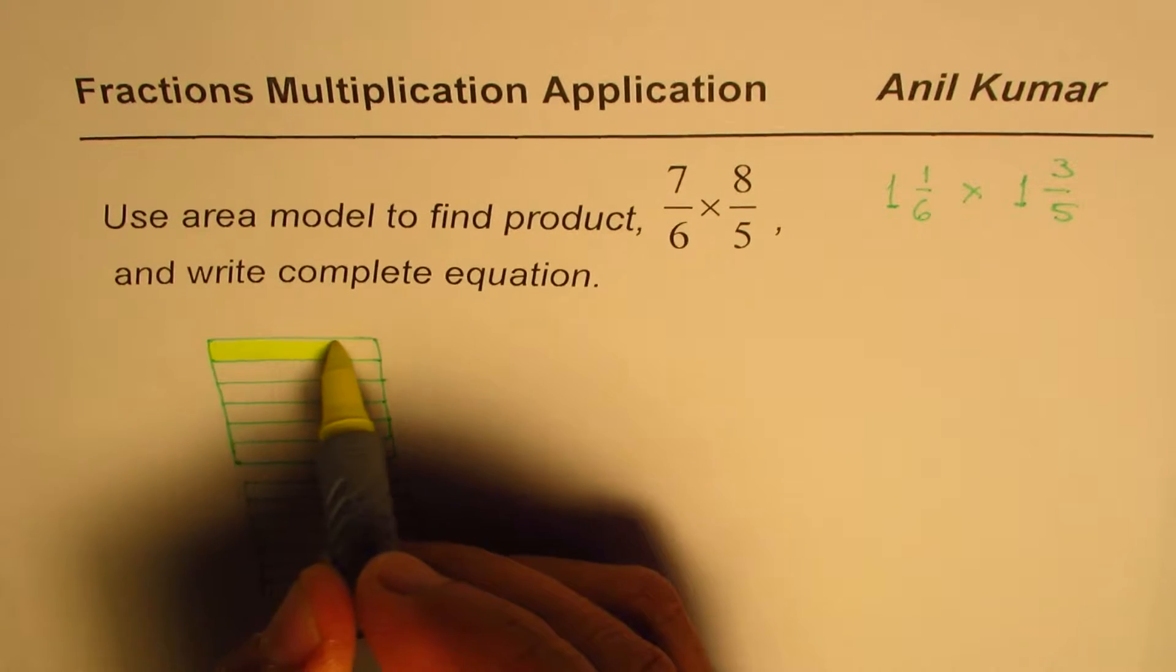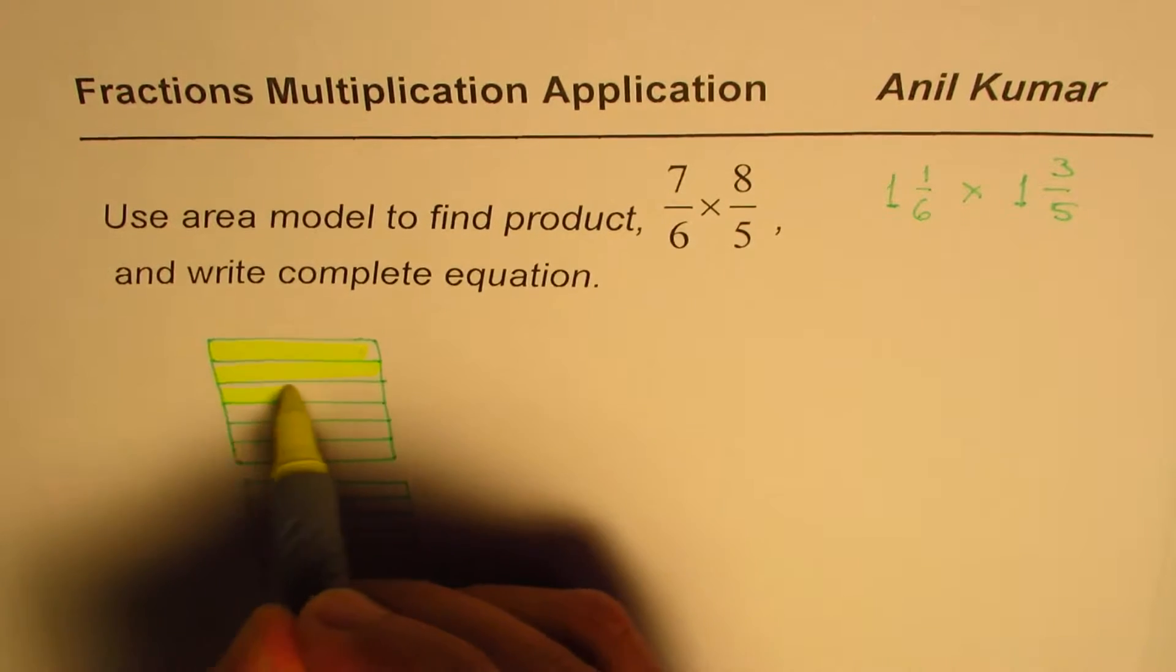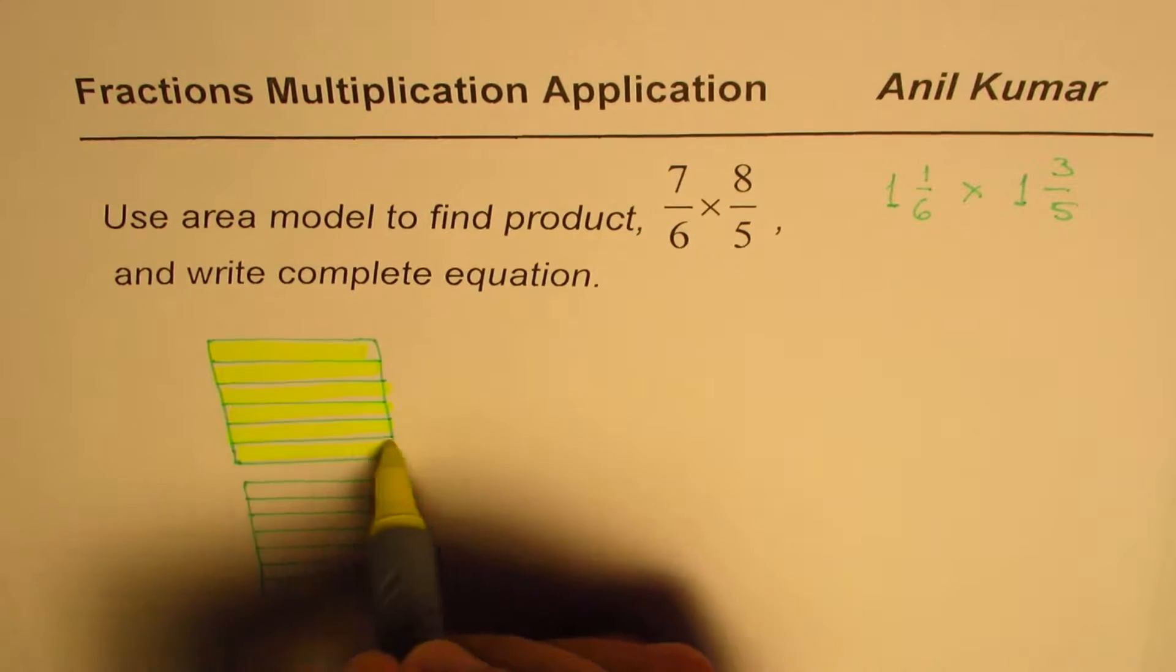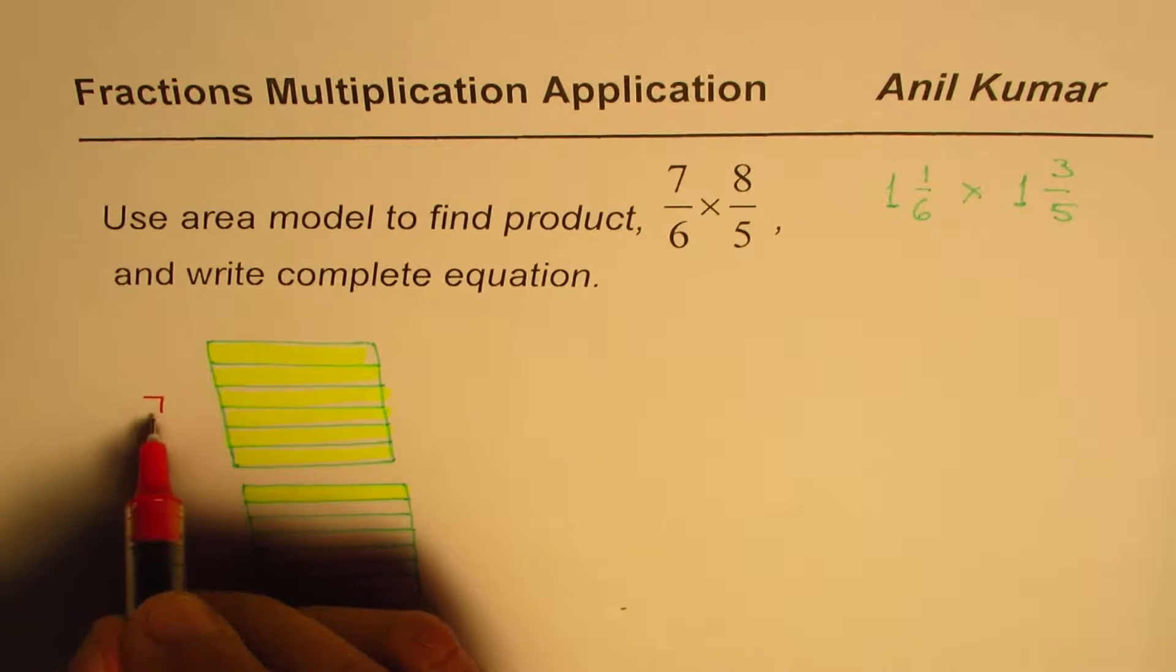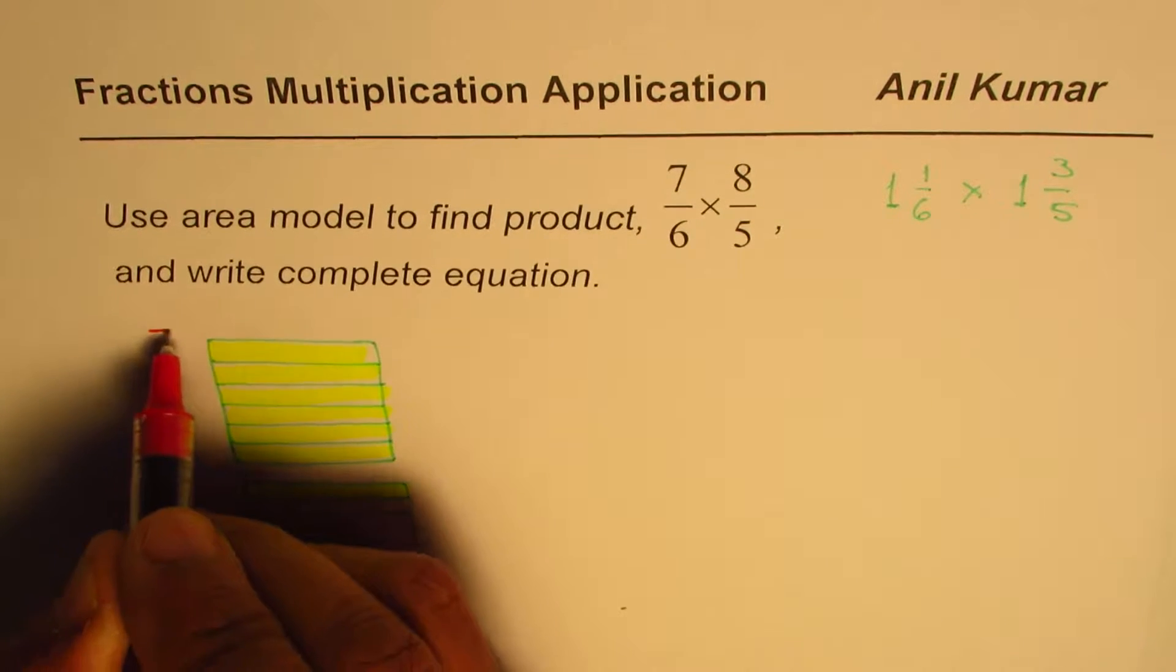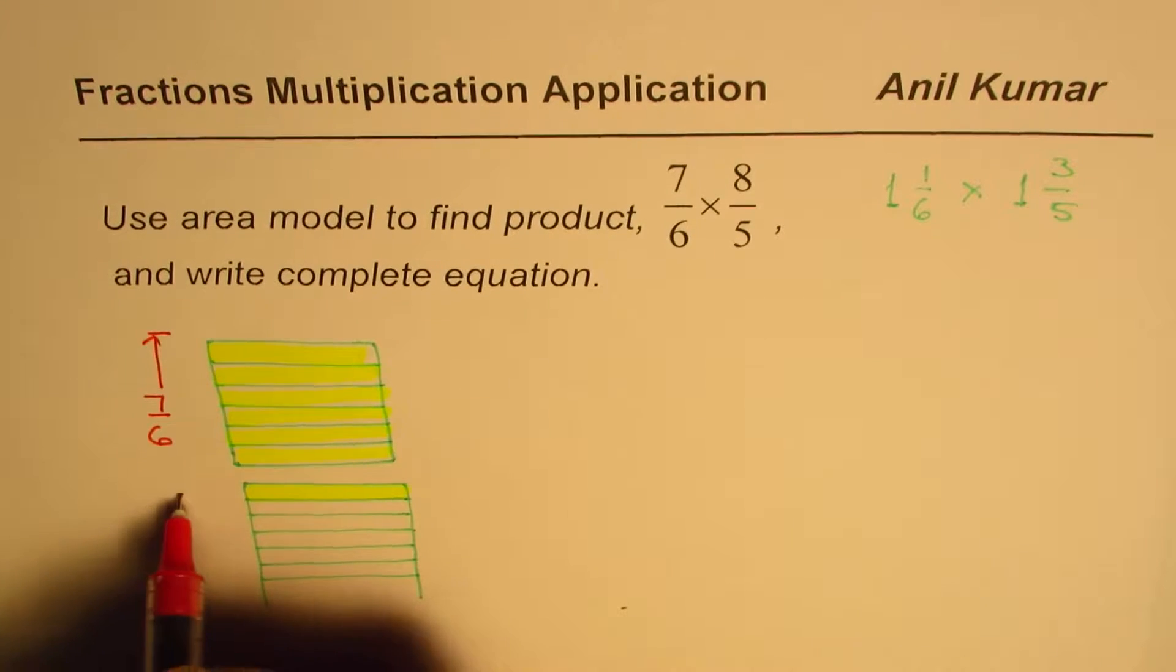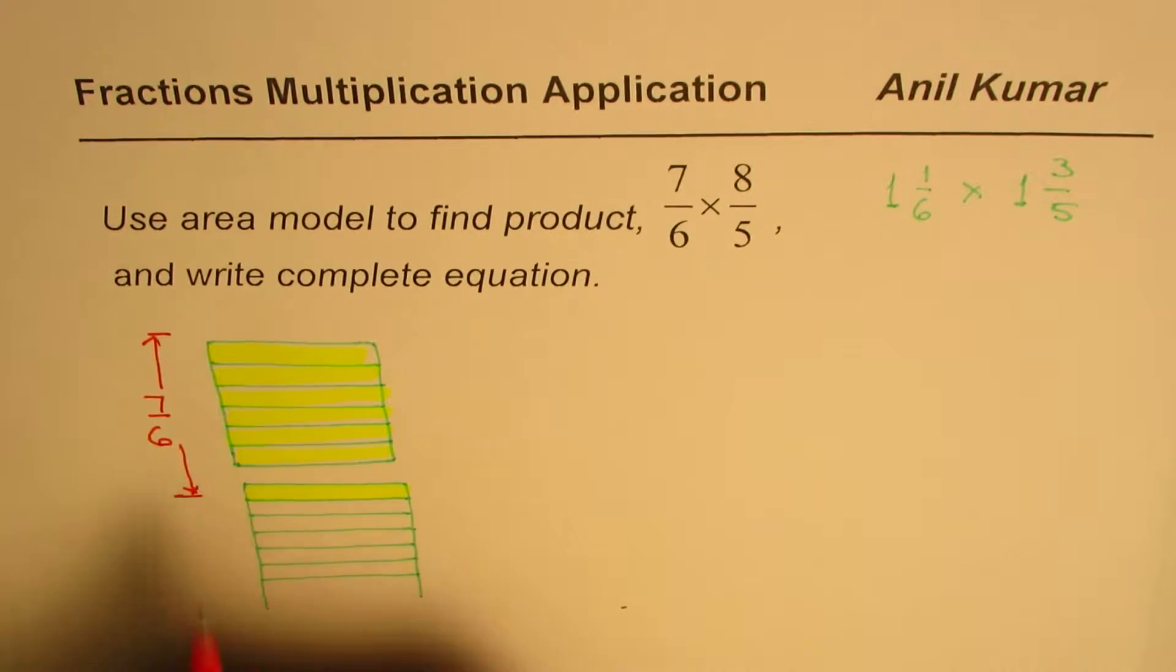So 7 out of 6 means all these 6. So it is 1, 2, 3, 4, 5, 6 and 7. So that is what we are calling as 7/6. So this is 7/6 correct. From here to this place, correct. So that is 7/6.